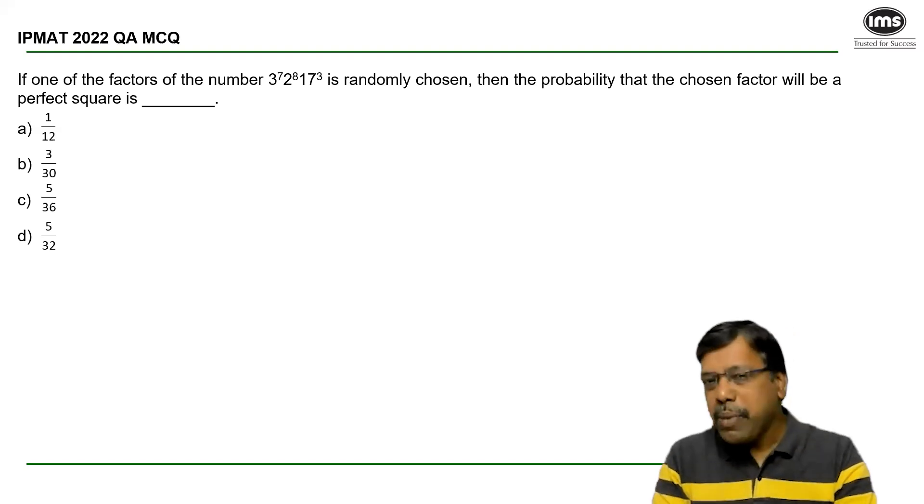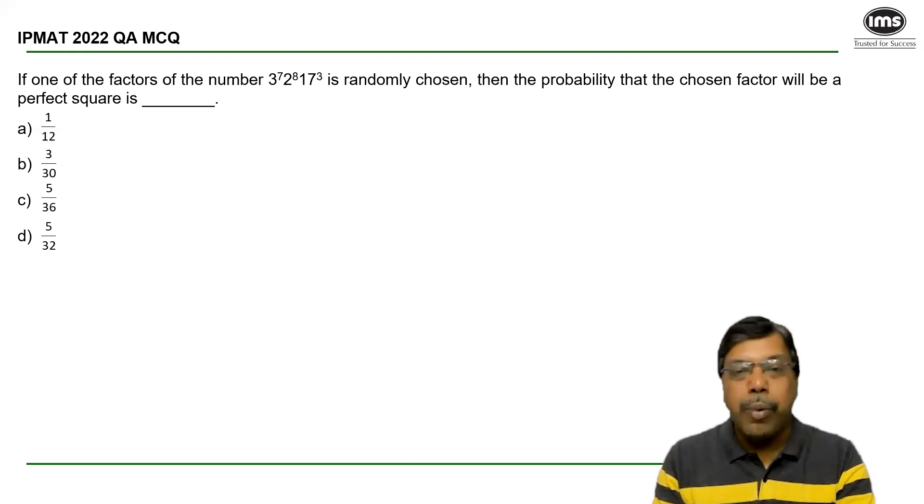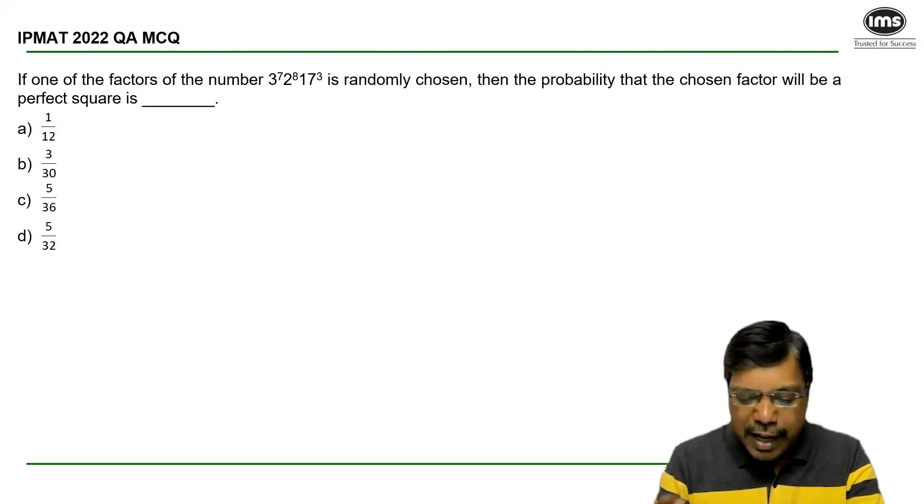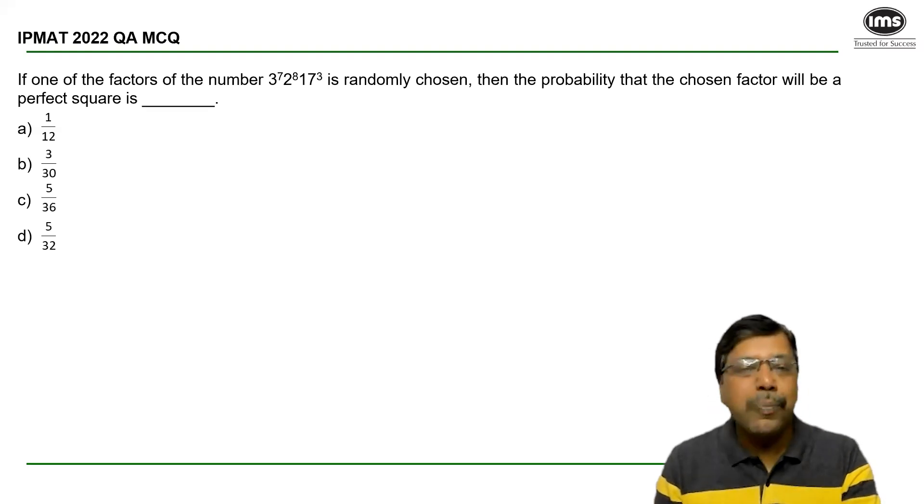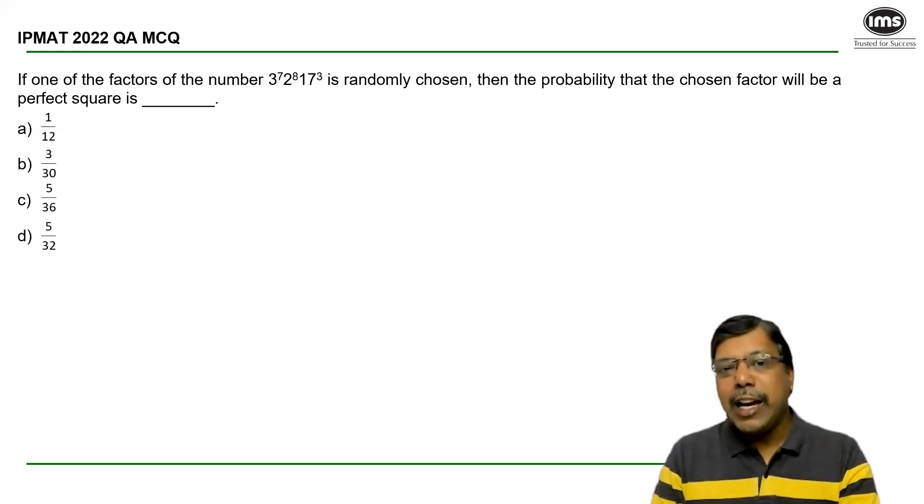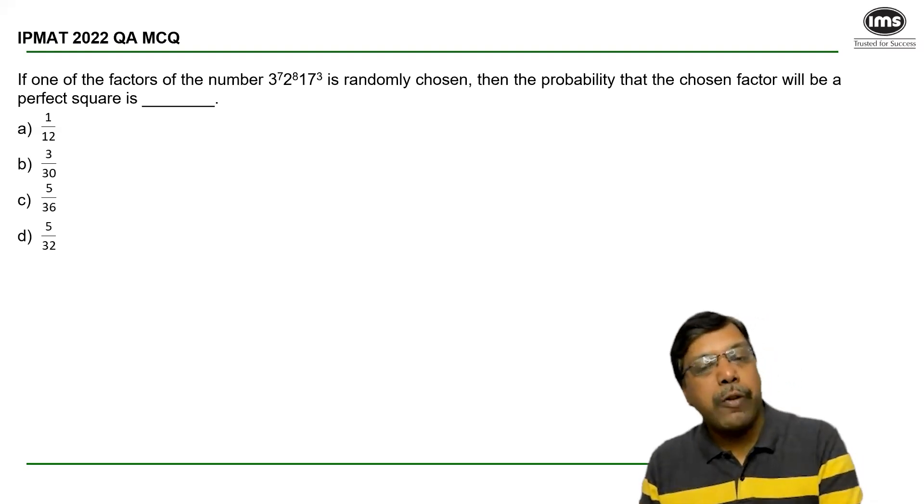A problem based on factors and probability. If one of the factors of the given number is randomly chosen, we need to calculate the probability that the chosen factor will be a perfect square.